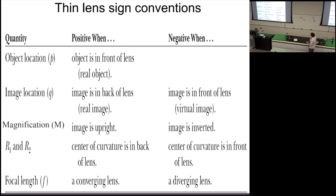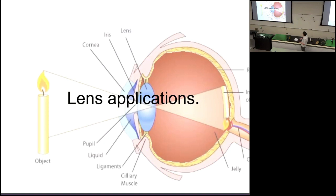A sign convention table will be provided with Test 3, because nobody can remember all the sign conventions. It tells you which quantities are positive and which are negative for lenses, and a separate one for mirrors.